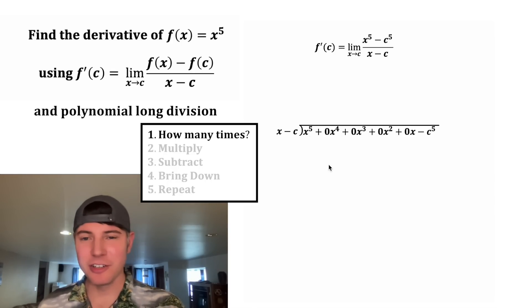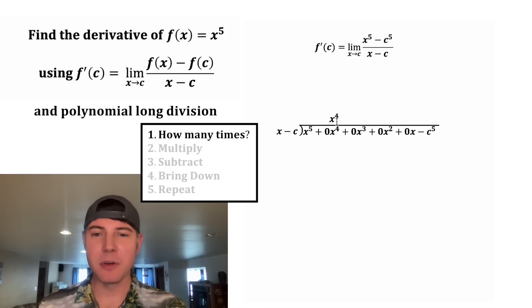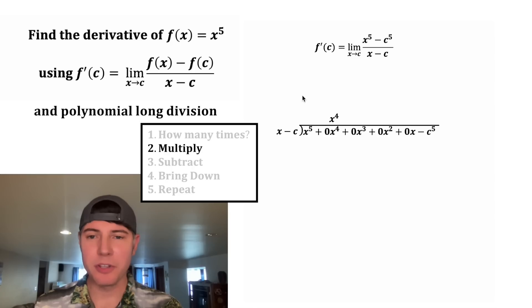So now to do this long division, we have to ask ourselves, how many times will x go into x^5? And that's going to be 1x^4. And next step is we're going to multiply. x^4 times x is equal to x^5. And x^4 times negative c is negative cx^4.